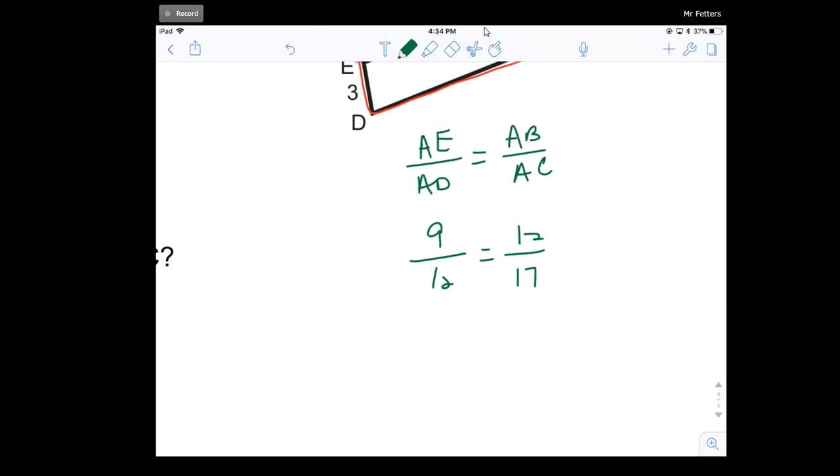So I can actually reduce if I wanted to. I can say nine over 12 reduces to three over four. And is that equal to 12 over 17?